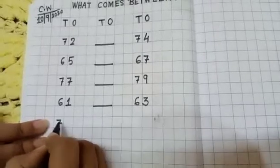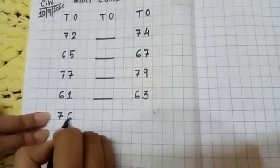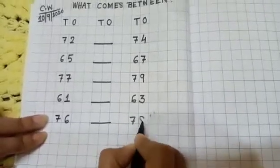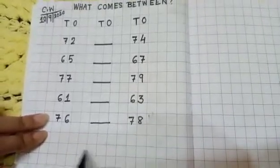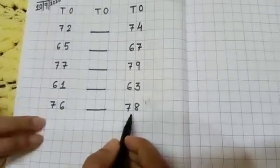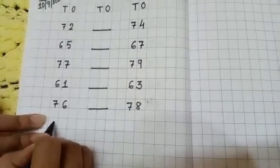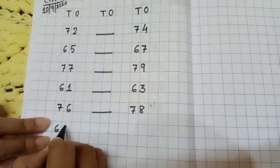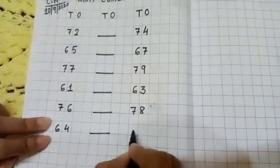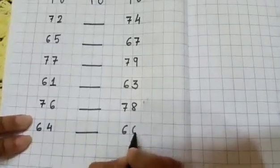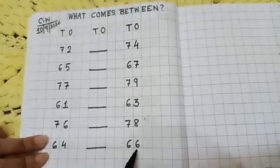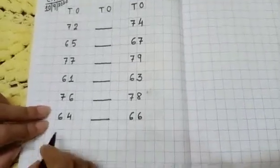Next, write: seventy-six dash seventy-eight. Then: sixty-four dash sixty-six.